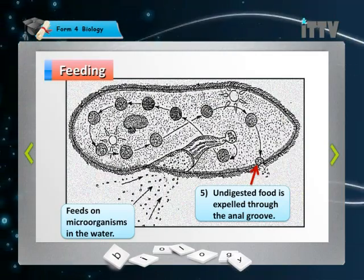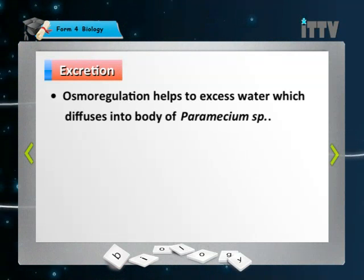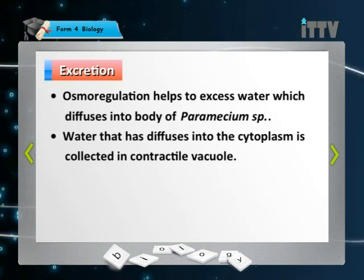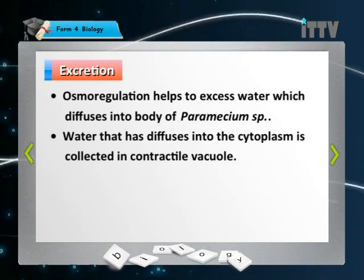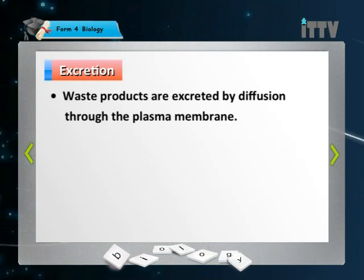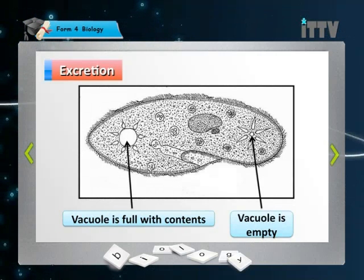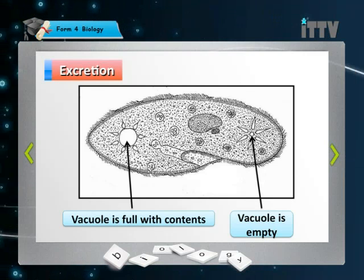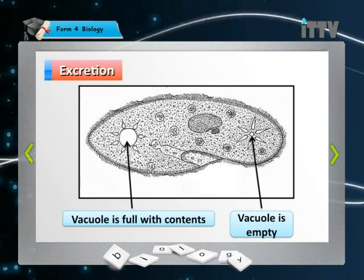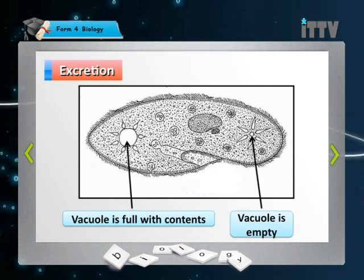Next, let's look at the excretion of Paramecium. The process of excretion is by osmoregulation of the contractile vacuoles. Water is collected in the contractile vacuoles from the cytoplasm by diffusion. When the vacuole is full, it contracts to expel its contents. In the diagram, you can see the left vacuole is full with water and dissolved substances, while the other end has an empty vacuole. The vacuole contracts, allowing all contents to be expelled into the environment.